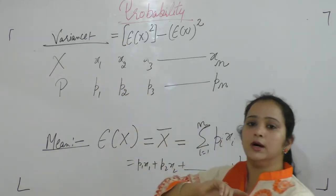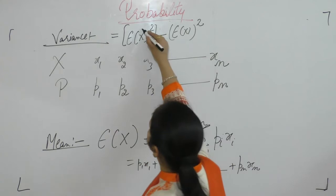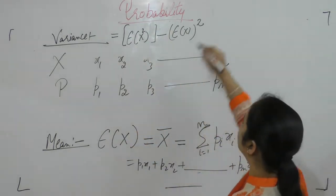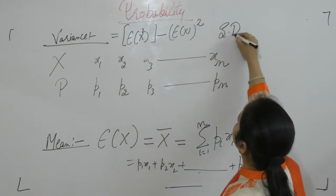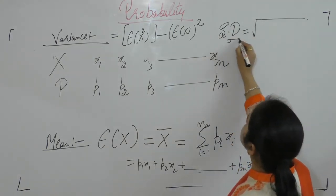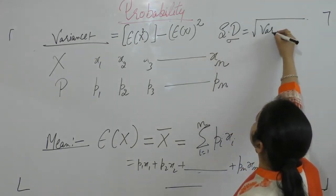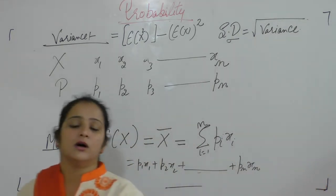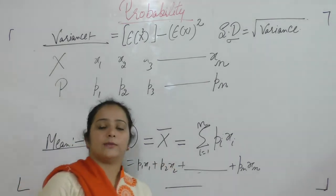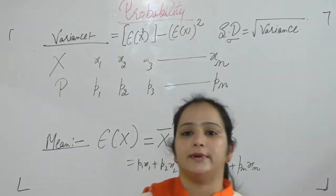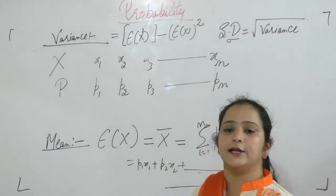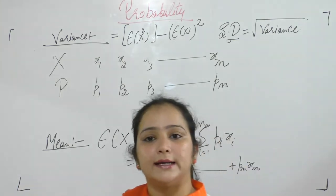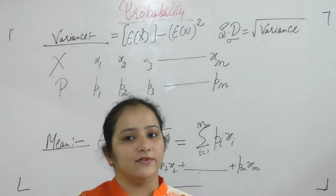Variance equals the expectation of x squared minus the expectation of x whole squared, and standard deviation sigma equals the square root of variance. So what we have covered so far: conditional probability, Bayes' theorem, random variable, discrete and continuous random variable, probability distribution, mean and variance.